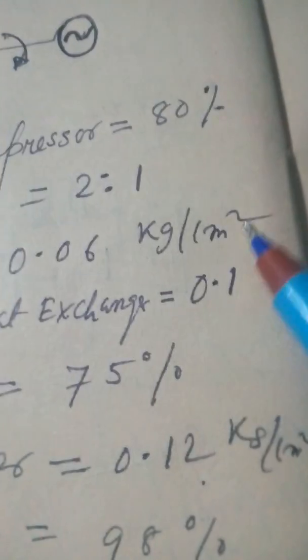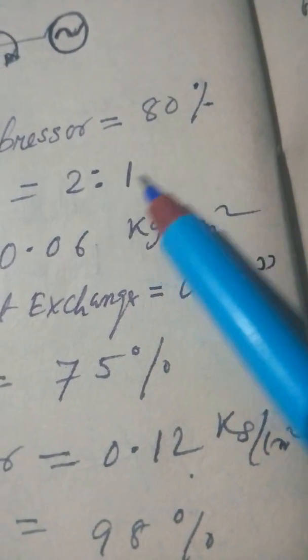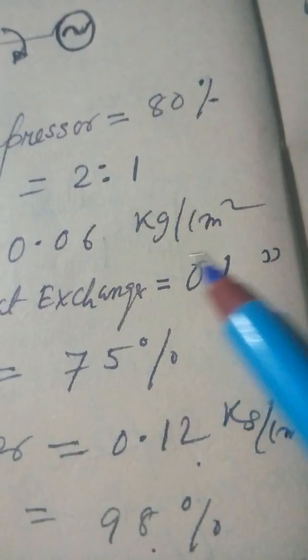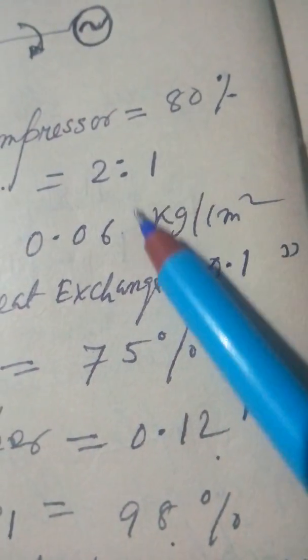Here you can convert it to 0.06 Newton per millimeter square or 0.06 Newton per meter square as you like.